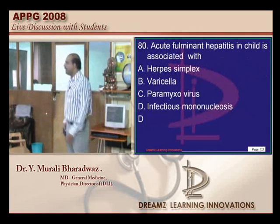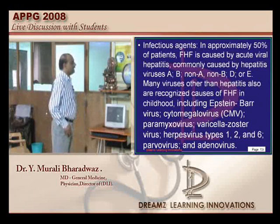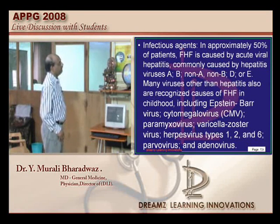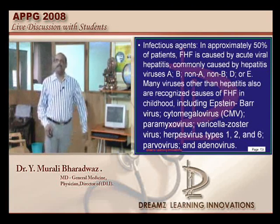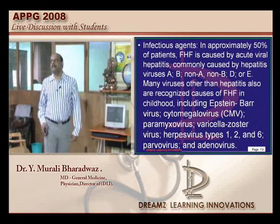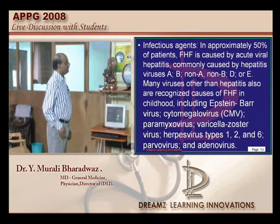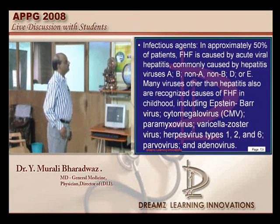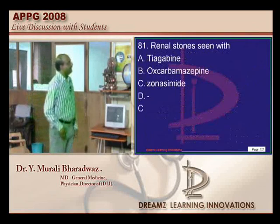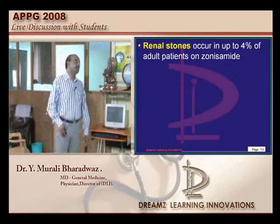For acute viral hepatitis, Hepatitis B is the most common cause. Non-hepatitis viruses that can cause it — especially in the paediatric population — include Epstein-Barr virus, cytomegalovirus, varicella zoster, herpes simplex virus types 1, 2, and 6, parvovirus, adenovirus, paramyxovirus. Infectious mononucleosis is also included. Renal stones are a complication of zonisamide, occurring in around 4% of the adult population.